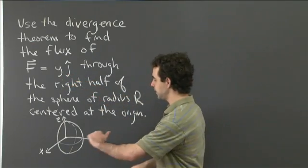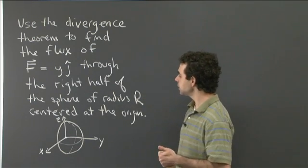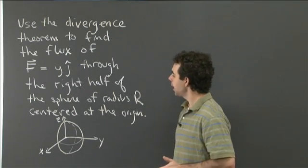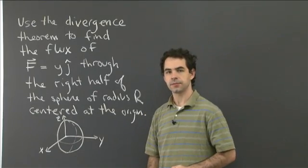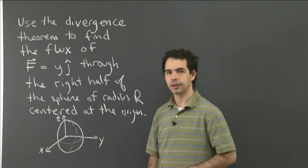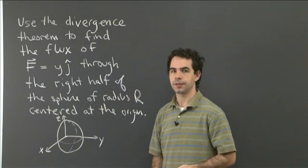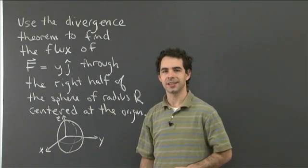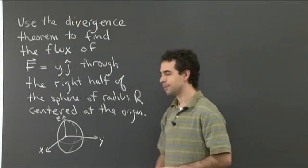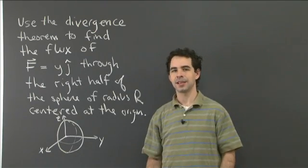which is given by y times ĵ, so it's just always in the y direction. I have this field and this hemisphere, and what I'd like you to do is compute the flux of the field through this hemisphere. As a hint, rather than parametrizing, use the divergence theorem to make your life a little bit easier. So pause the video, take some time to work that out, come back, and we can work on it together.